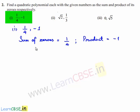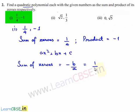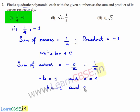Let us assume the quadratic polynomial as ax² + bx + c. We know that sum of zeros is equal to -b/a, and the given sum of the zeros is equal to 1/4. So we can say that b is equal to -1 and a is equal to 4.